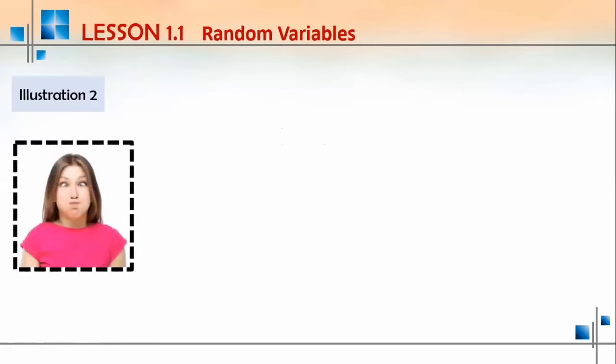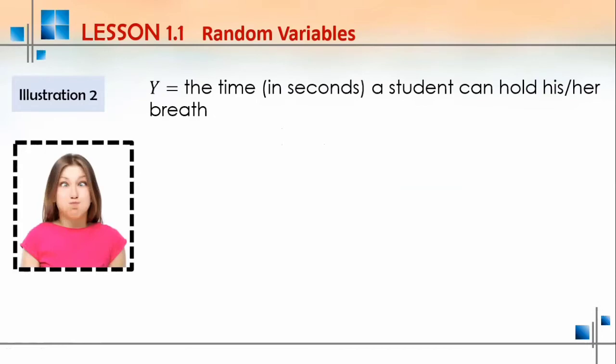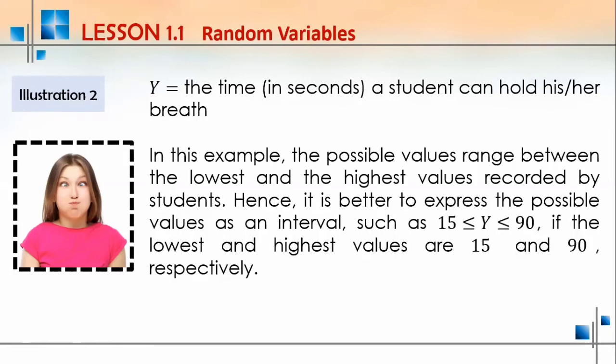For the second illustration, holding a breath: let Y be the time in seconds a student can hold his or her breath. The possible values range between the lowest and highest values recorded. It is better to express the possible values as an interval, such as Y is greater than or equal to 15 but less than or equal to 90 seconds, if the lowest and highest values are 15 and 90 respectively.